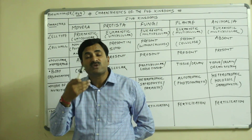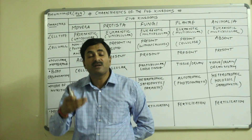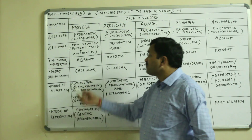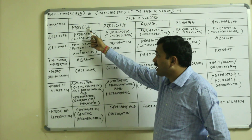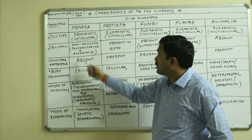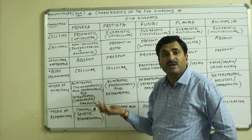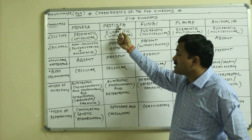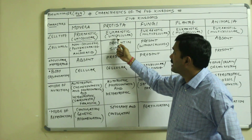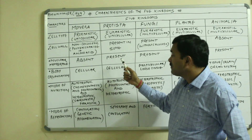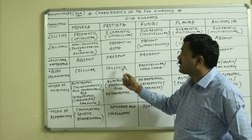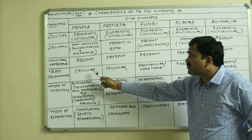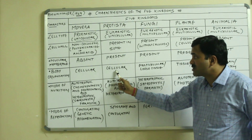Now, body organization. There are different types: cellular grade, tissue grade, organ grade, and organ system level. In Monera, body organization is cellular because they are unicellular and cannot form tissues. In Protista, though they are eukaryotic, they are unicellular so they also cannot form tissues — their cell organization is cellular type. Both Monera and Protista have the cellular grade of body organization.